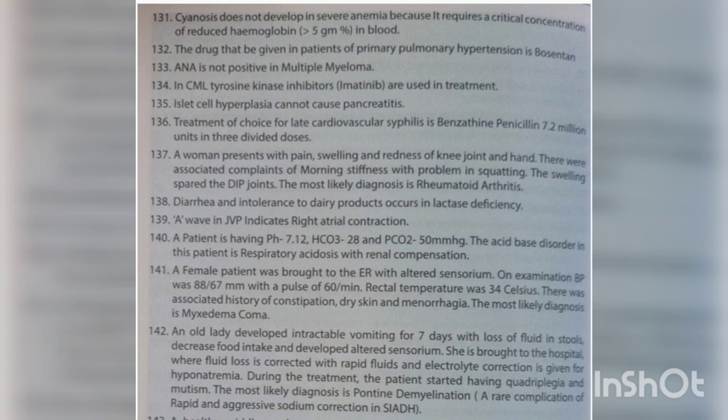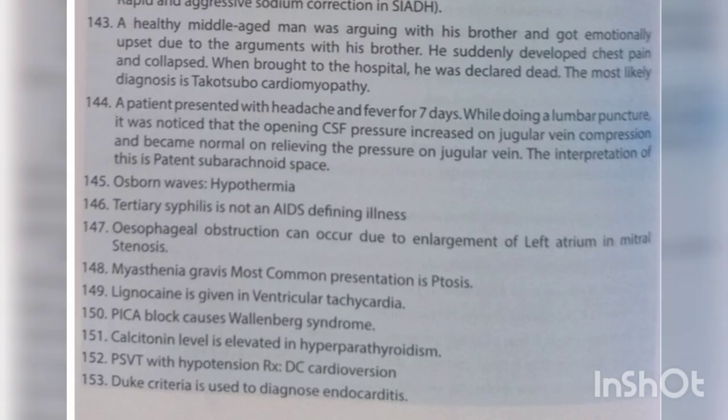An old lady developed intractable vomiting for seven days with loss of fluid, decreased oral intake, and altered sensorium. Fluid loss was corrected with rapid fluids and electrolyte correction for hyponatremia. During treatment, the patient started having quadriplegia and mutism. The most likely diagnosis is osmotic demyelination syndrome — a rare complication of rapid and aggressive sodium correction in SIADH.